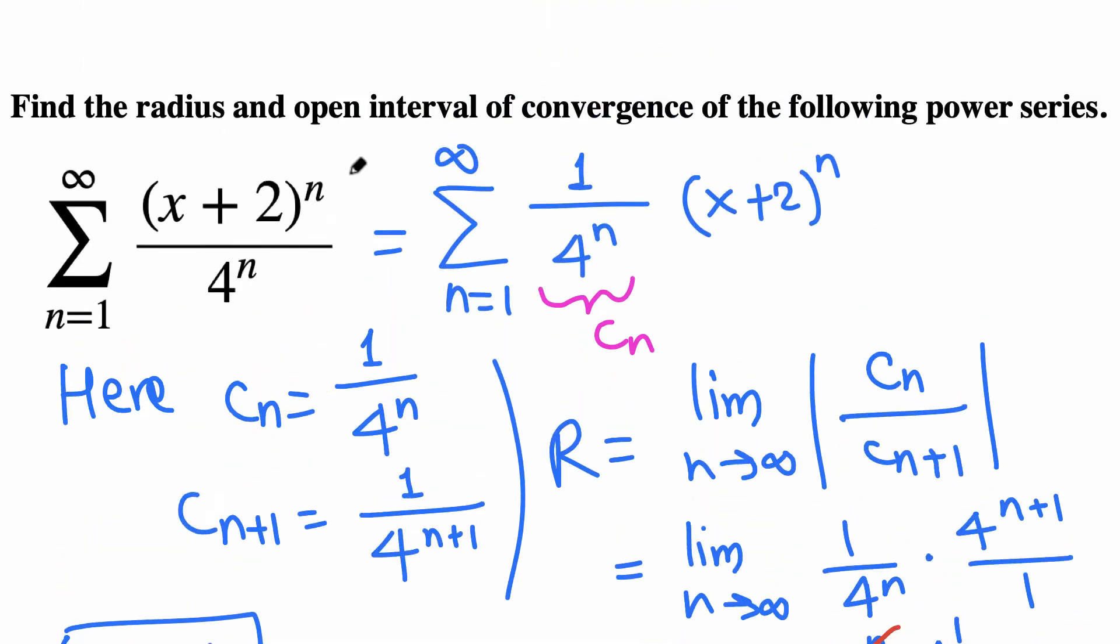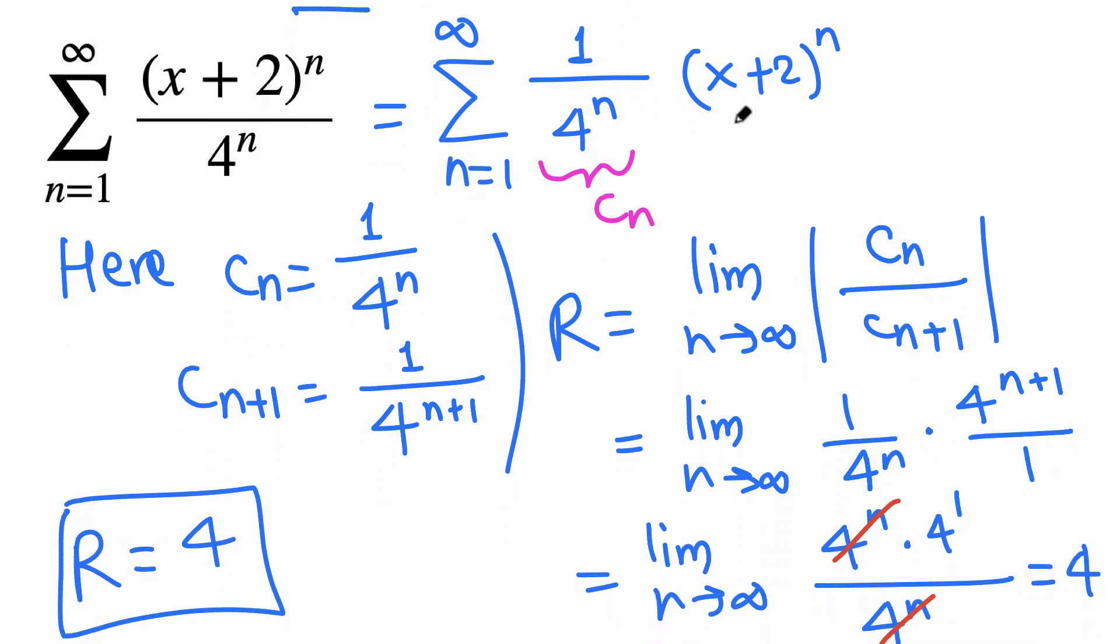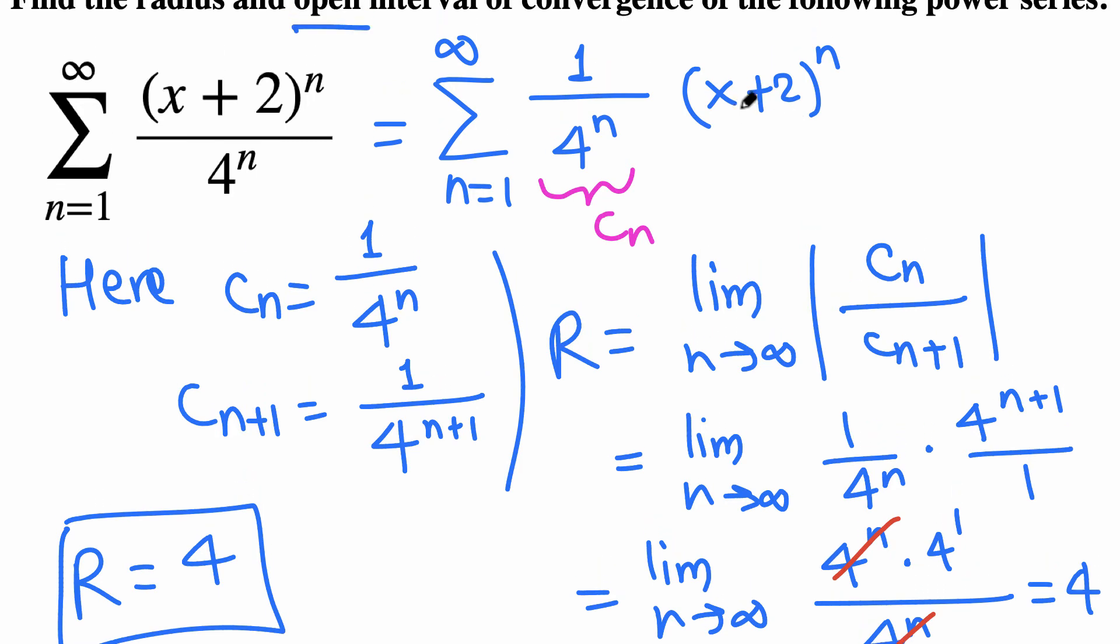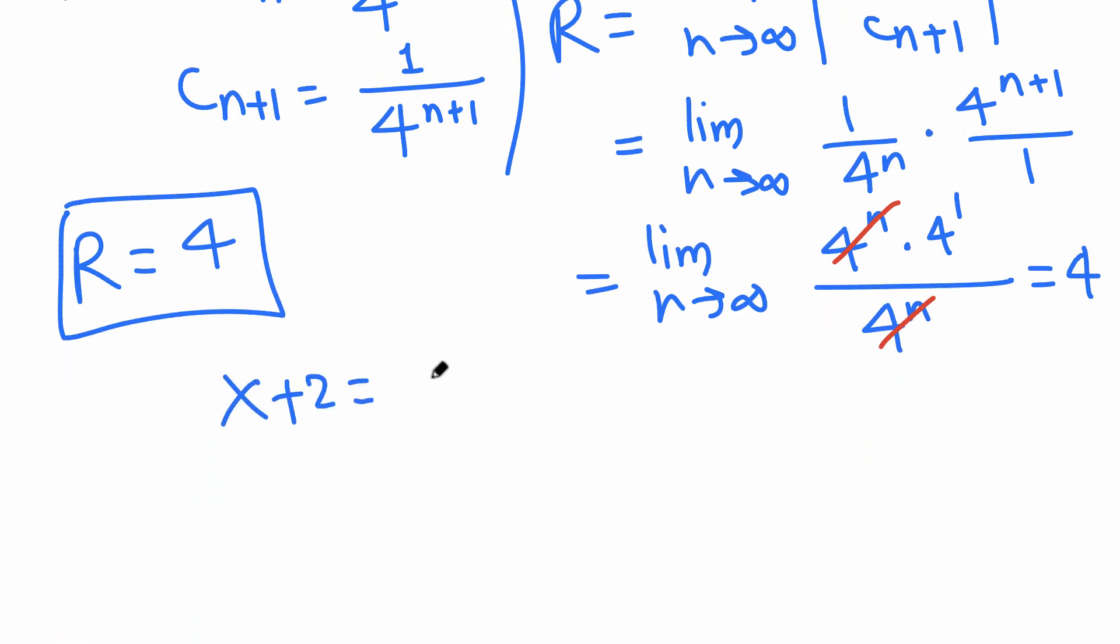Now we need to find the open interval of convergence. Looking at x+2 in the power series, x+2 is the same as x minus negative 2, so negative 2 is the center for the interval of convergence.